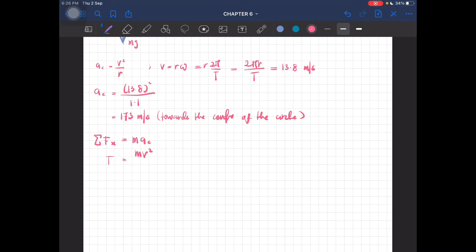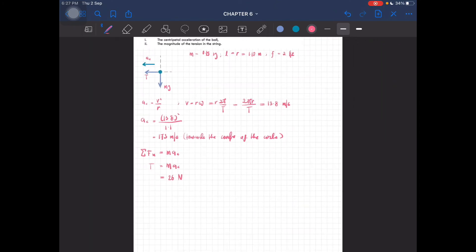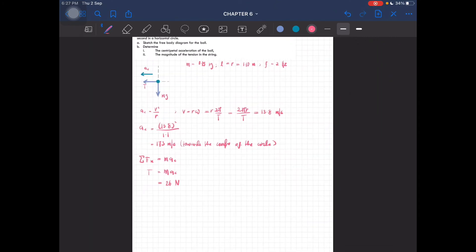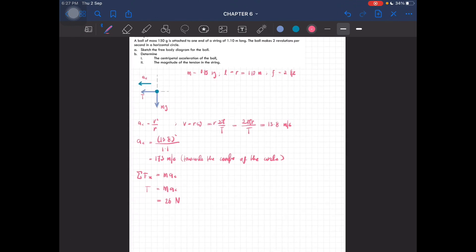So m is just—substitute the value, and then the centripetal acceleration. You should get 26 newtons as the tension. Okay, Example Number 6.